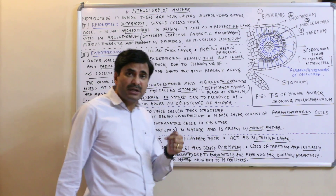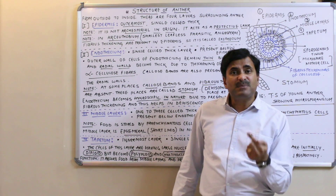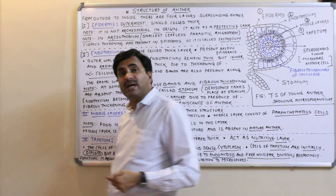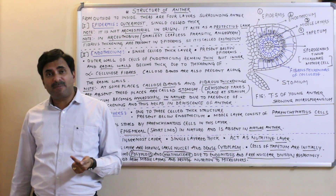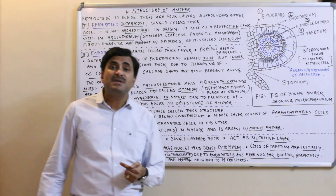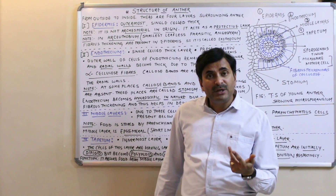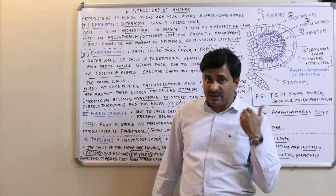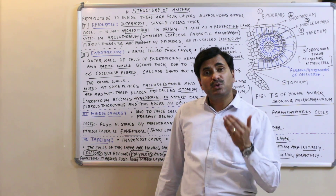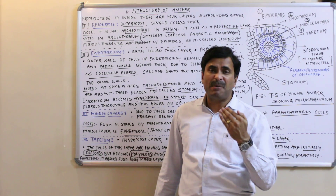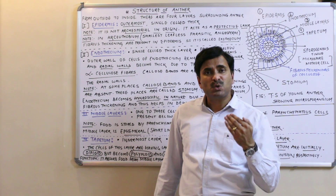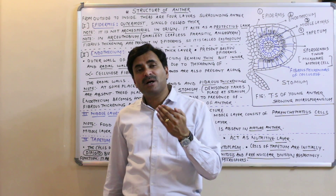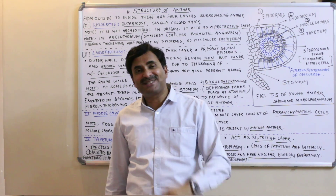The tapetum is of two types: the amoeboid tapetum, which is the primitive type, and the secretory tapetum, which is the advanced type. The most common type is the secretory tapetum. The other functions and types of tapetum will be discussed in a separate upcoming video.